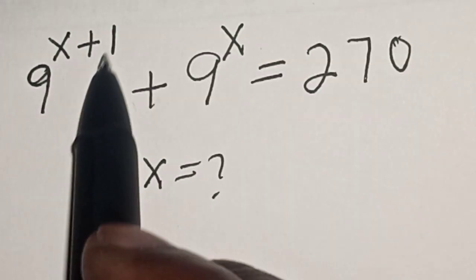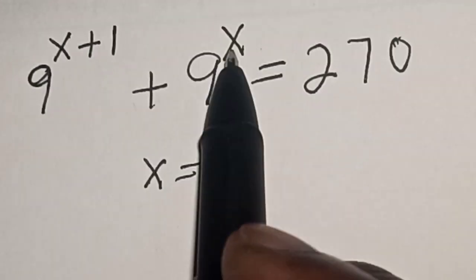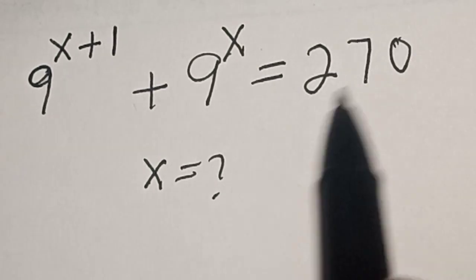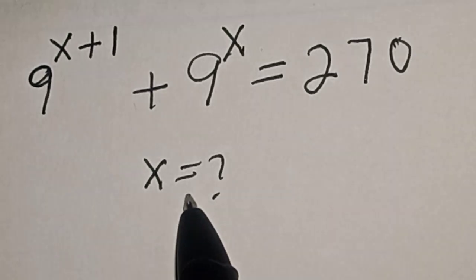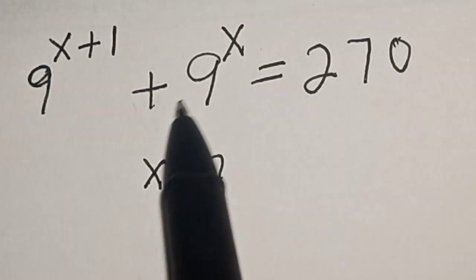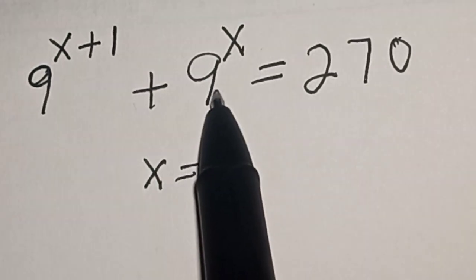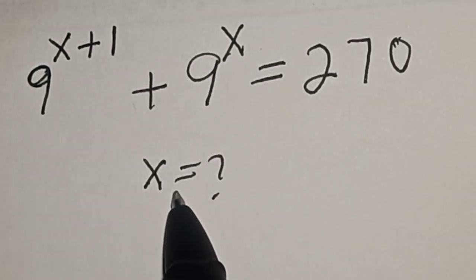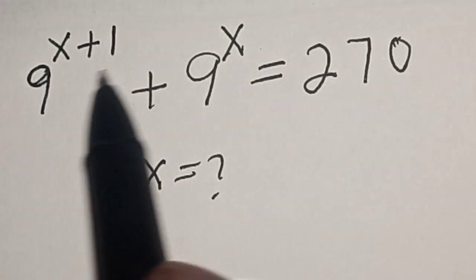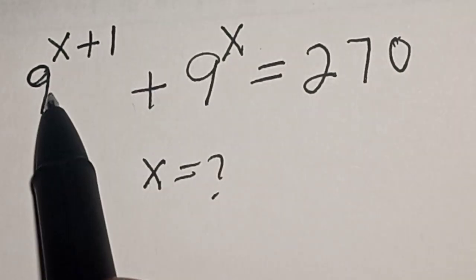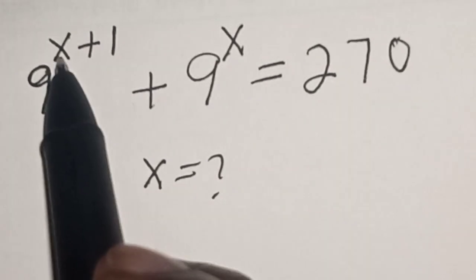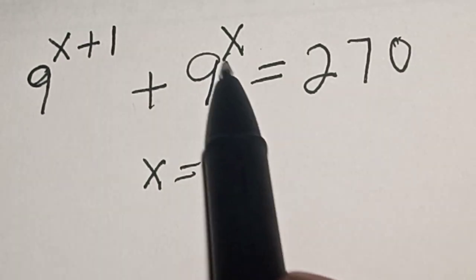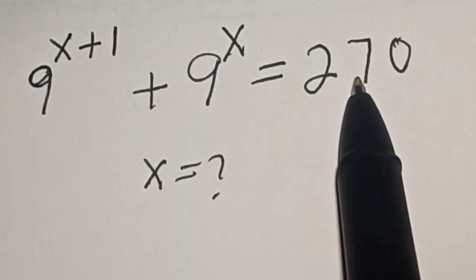9 raised to power x plus 1, plus 9 raised to power s, is equal to 270. What is the value of s? Hi everyone, welcome to my class. In this class, we want to find the value of s from this given exponential equation: 9 raised to power s plus 1, plus 9 raised to power s, is equal to 270.